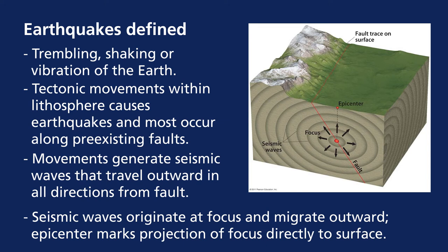Seismic waves originate at what's called the focus and migrate outwards. Epicenters mark the projection of the focus directly to the surface. The red dot in the figure is the focus of the earthquake, where the earthquake is happening, along the fault shown as the red line. This tectonic movement along the fault causes seismic waves which radiate in three dimensions from the focus. Directly above the focus is the epicenter, the location on the earth's surface under which the earthquake has taken place.